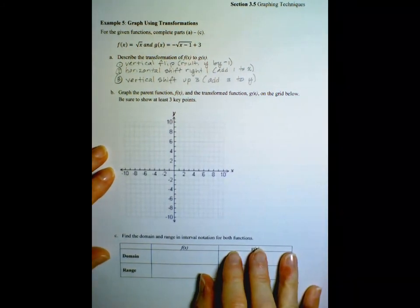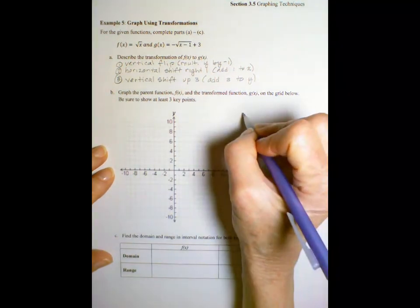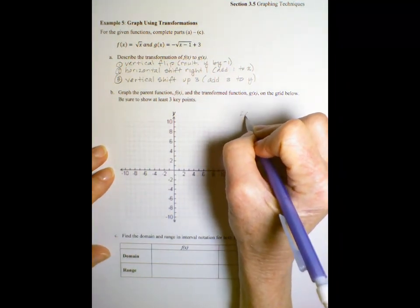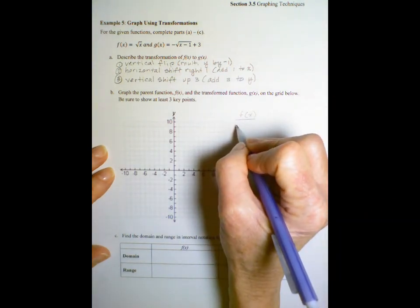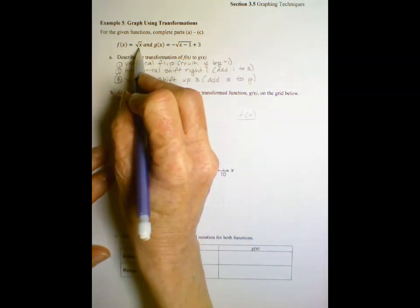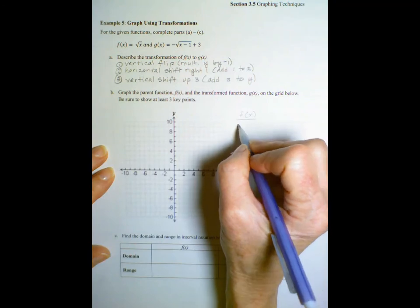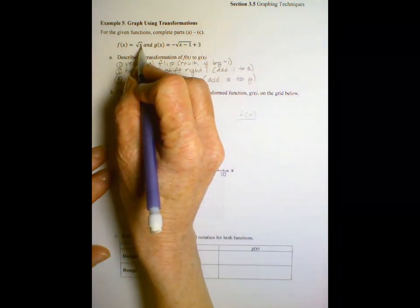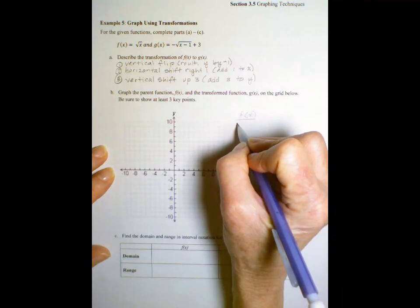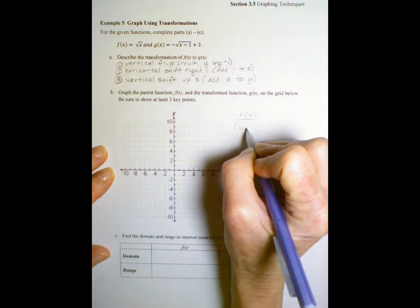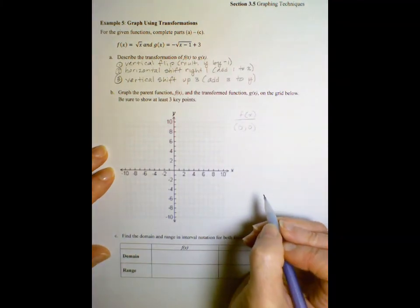So let's try this time, instead of making a table, I'm just going to write some ordered pairs. So for our f of x, the ordered pairs we've been using to graph that. Now remember, this is the square root function, so our domain is limited to zero and the positive integers. So we would have the point zero and zero, right? Take the square root of zero, we get zero.